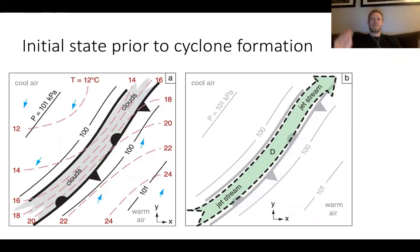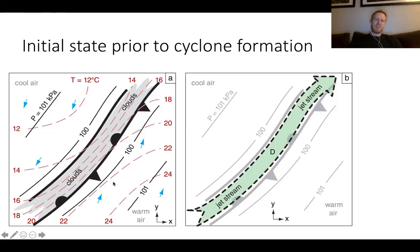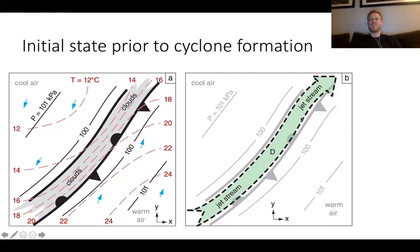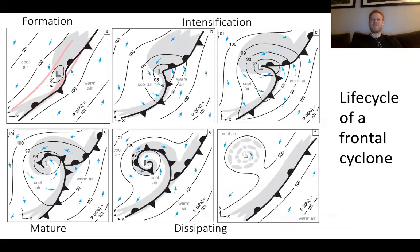Prior to cyclone formation, this depicts the polar front — just a band of enhanced temperature gradient depicted as a stationary front. The red dashes here are temperature isotherms — colder air to the left and warmer air to the south along the front. The jet stream is associated with that temperature gradient, and both the jet stream and this temperature gradient are the energy sources that can be tapped into to create a frontal cyclone.